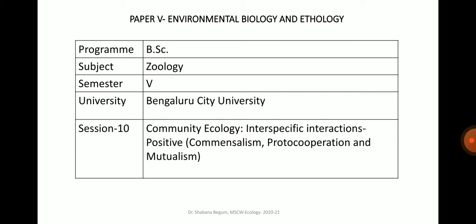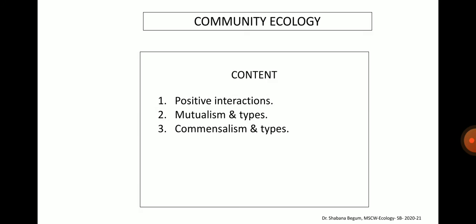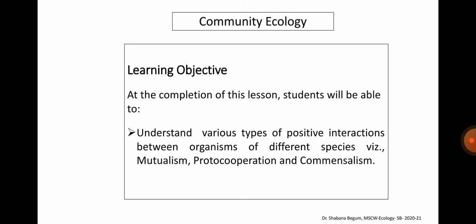Today, I am going to discuss about the positive inter-specific interactions such as Commensalism, Proto-Cooperation and Mutualism. The content of this topic is to know about the positive interactions, Mutualism and its types, and Commensalism and its types. The learning objectives are to understand the various types of positive interactions between organisms of different species such as Mutualism, Proto-Cooperation and Commensalism.